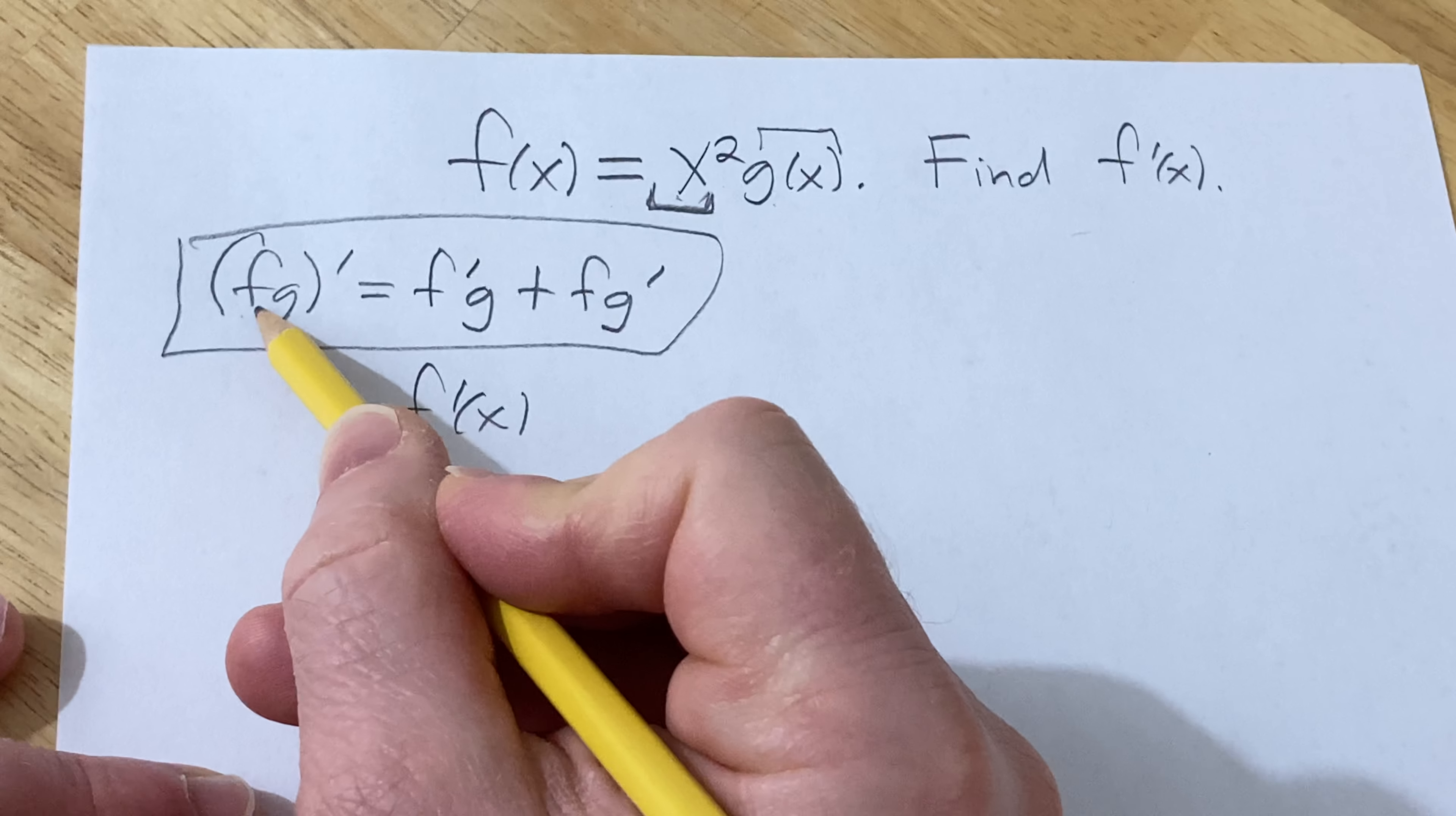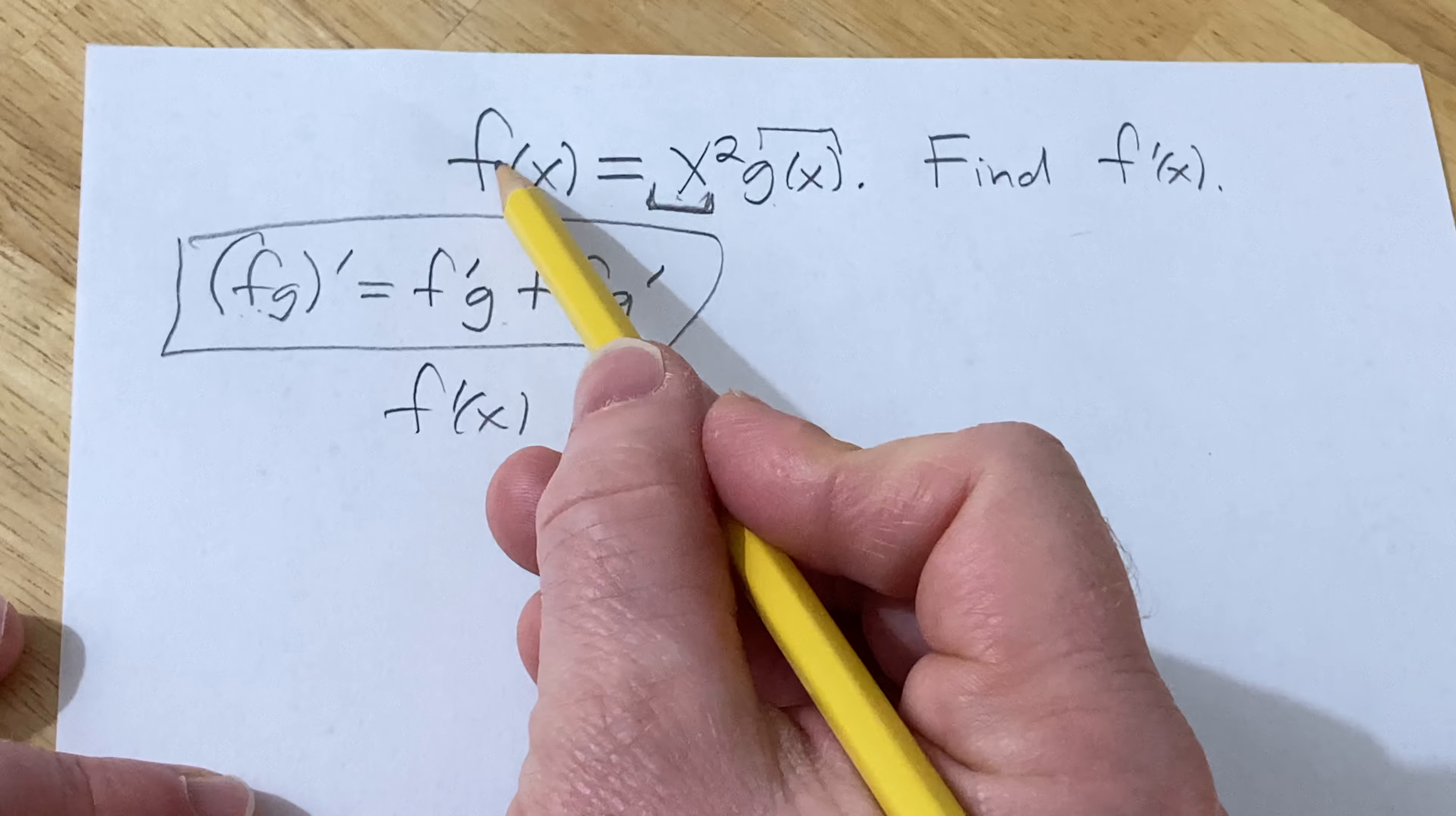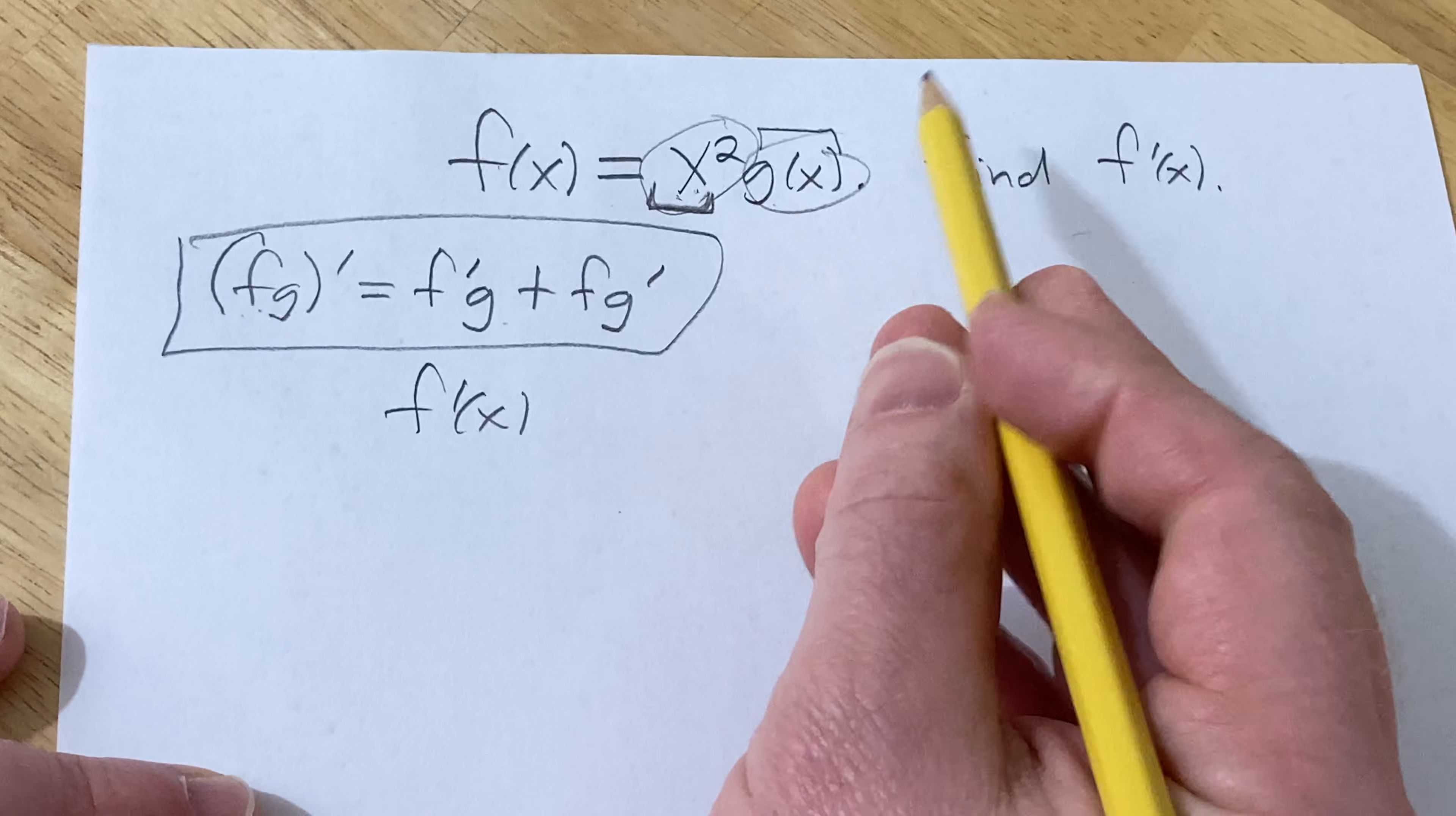So f prime of x, try not to think about the variables f and g, try to think about first and second because obviously here this is f but in the formula this is f so it's a little confusing. So you want to think about it as the first function the second function.